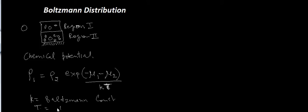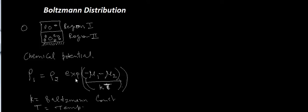At higher temperatures, the entropic factor is higher. As you increase the temperature, the exponential term decreases, and rho1 will be closer to rho2 — the difference between region one and region two will be lower. However, as you increase the potential difference, this difference will be higher.